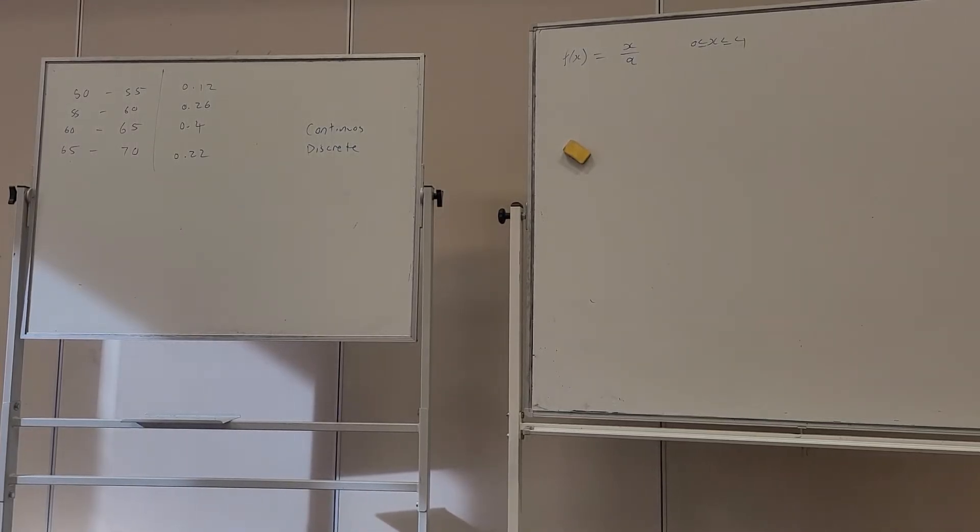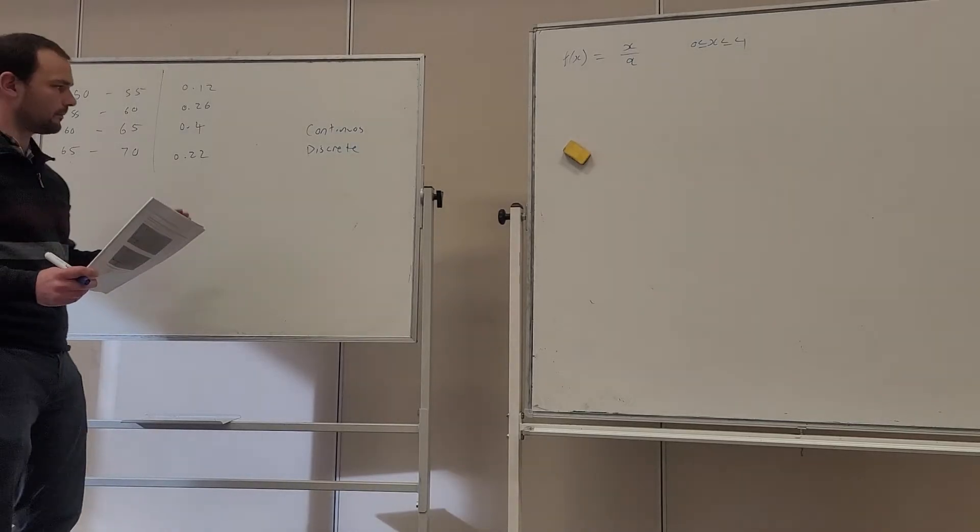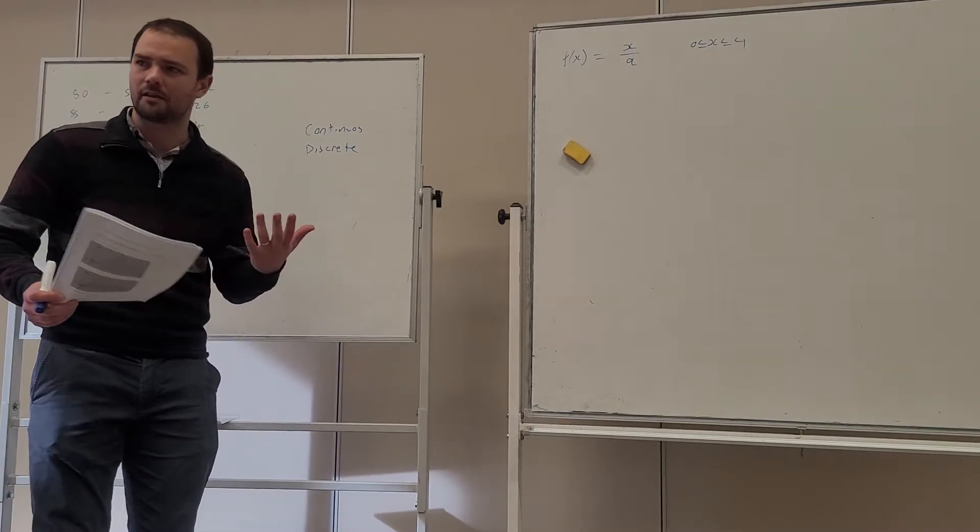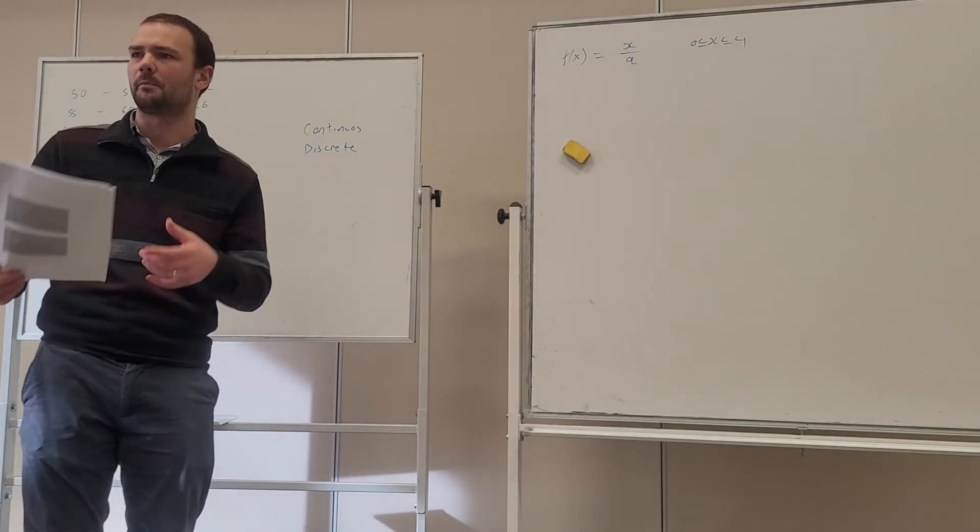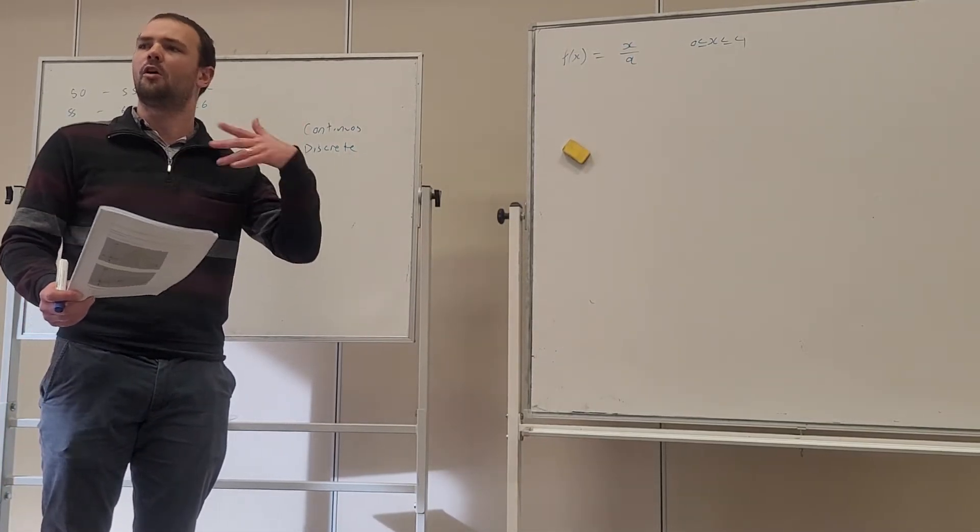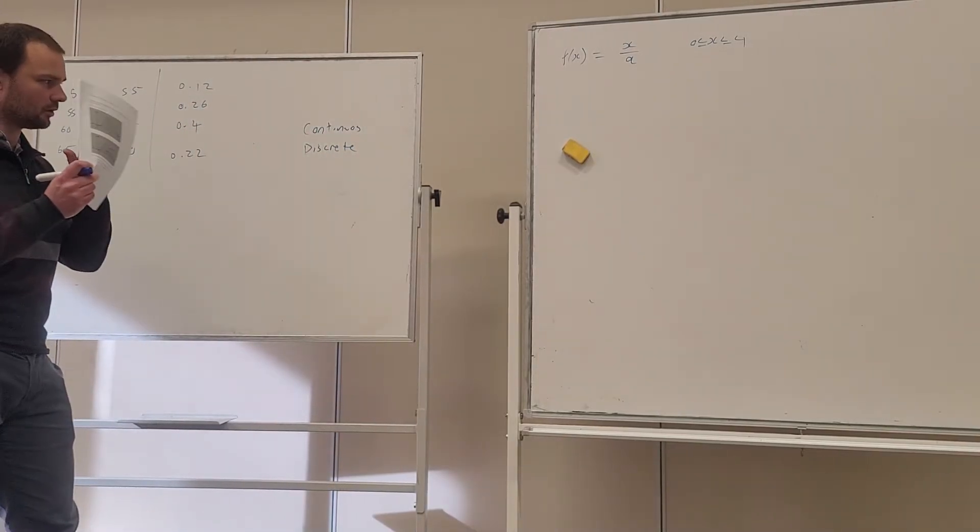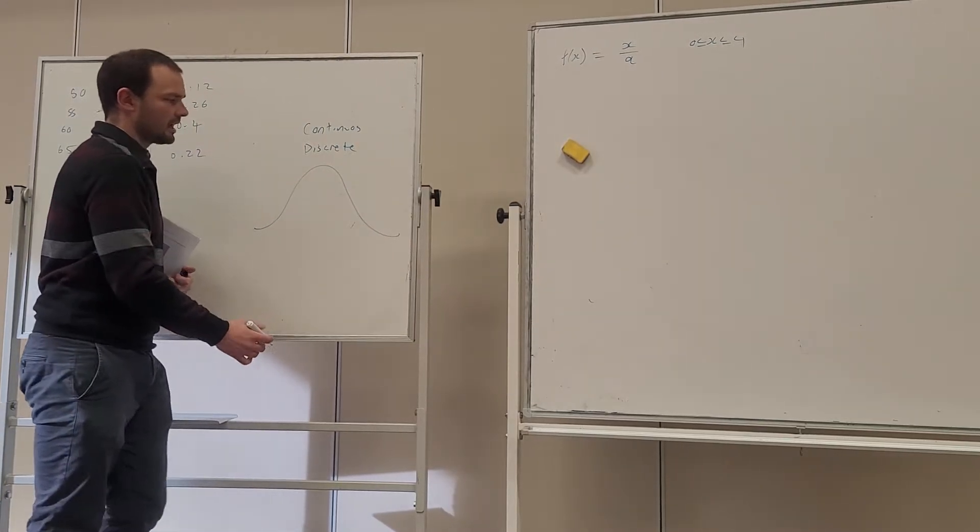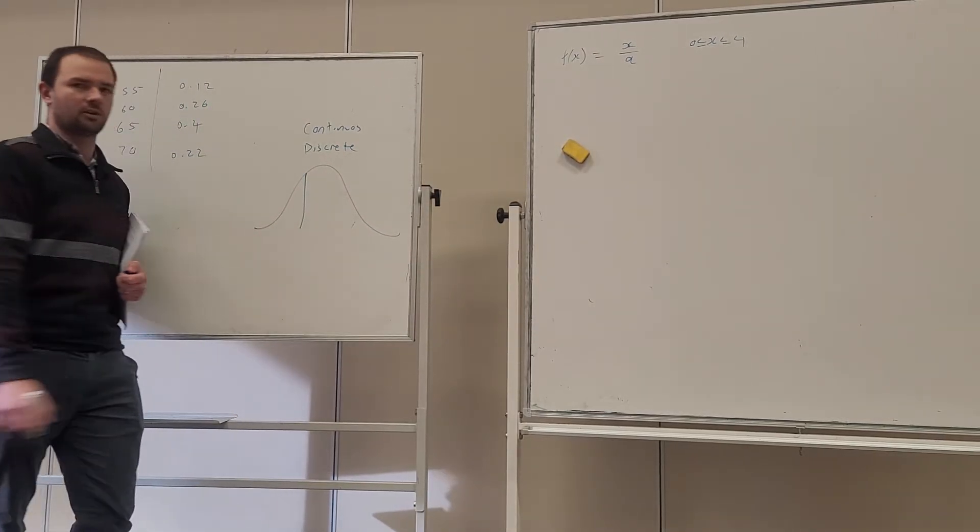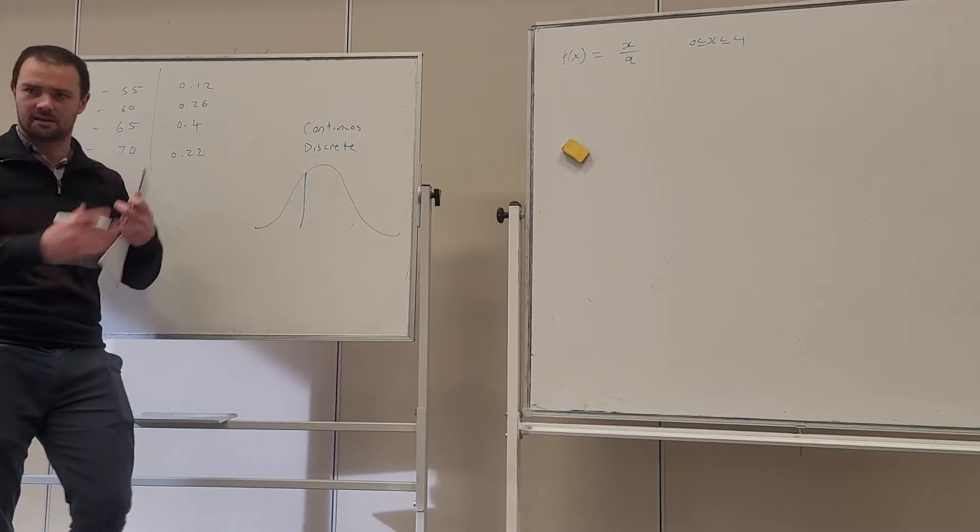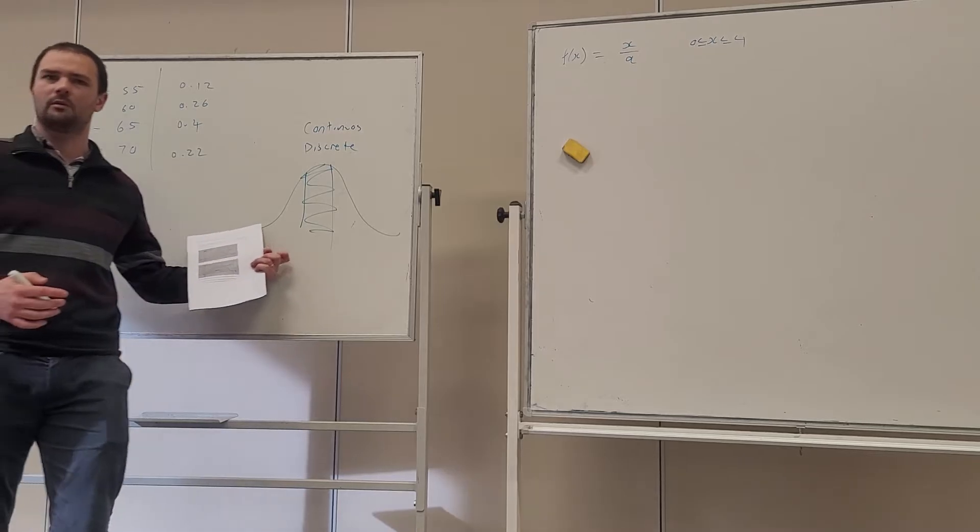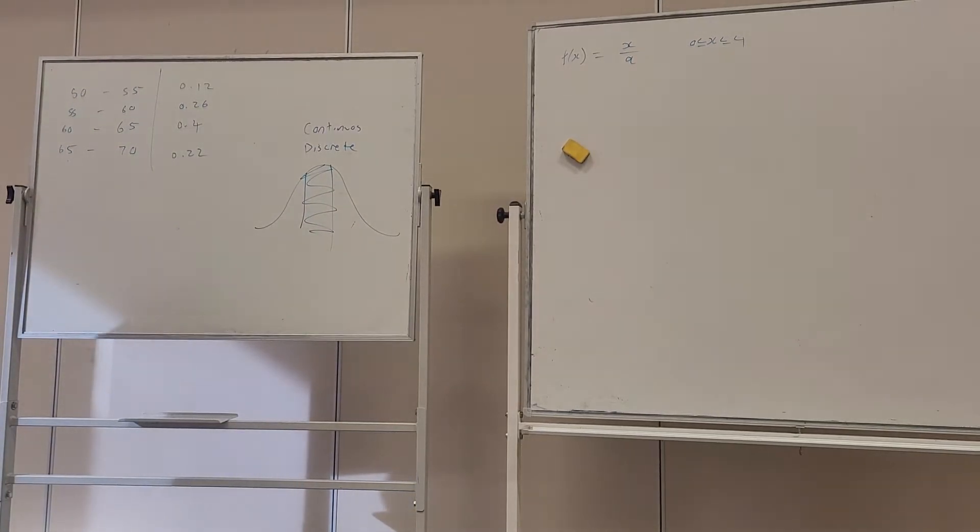The probability of a continuous random variable being equal to an exact value is always 0. Okay, so that's an important point. For continuous random variables, we're always calculating probability over an interval. Whereas remember with discrete, we're rolling a dice and we're saying, what's the probability of it landing on 1? It's always a whole integer value. Whereas continuous is always going to be over a spectrum. And you'll remember that normal distribution. You can't say, what's the probability of this event occurring? That doesn't make sense. It's always between two events. What's the probability of this event occurring between this lower boundary and this upper boundary? Always the case with continuous variables.